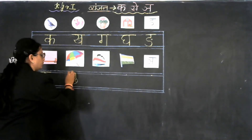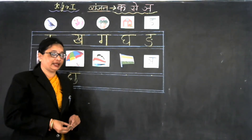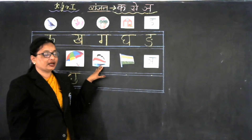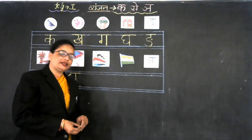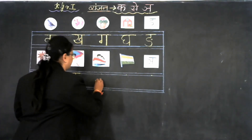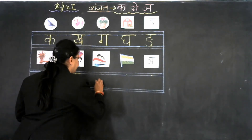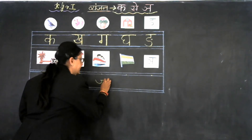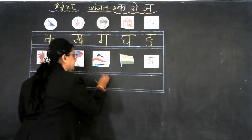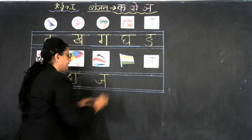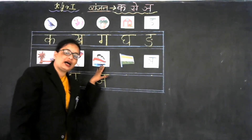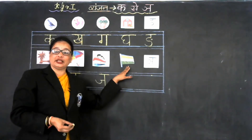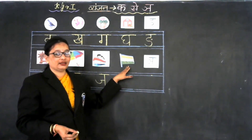Now our next Vyanjan is Ja. Ja se jah. And what is the formation of Vyanjan Ja? Now look at the board. Make the U like this, then slipping line, then standing line like this, and slipping line on the top like this. Jha se jah.